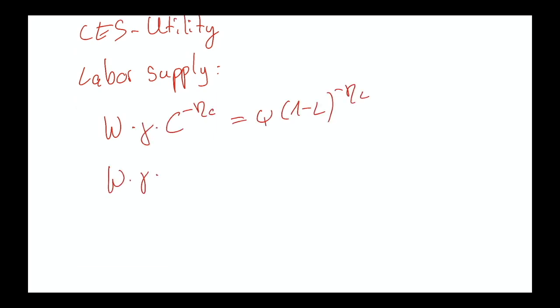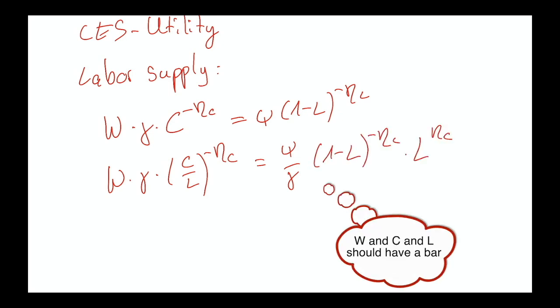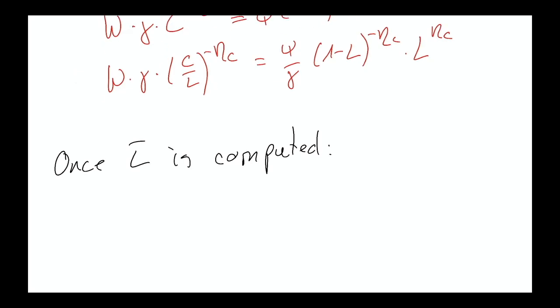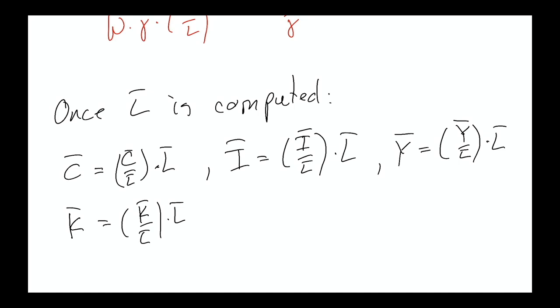For CES utility, labor supply in steady state can be re-expressed using C over L, but the resulting right-hand side cannot be simplified or rearranged to isolate L-bar on the left with only known terms on the right. This cannot be solved in closed form, but it is a very simple equation for the computer to solve — given an initial value for L-bar, it will find the fixed point. Once we have L-bar, our recipe is complete and this finishes the steady state computations.